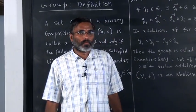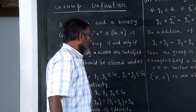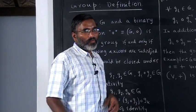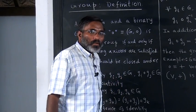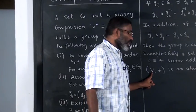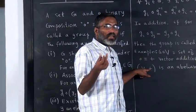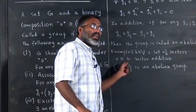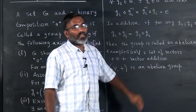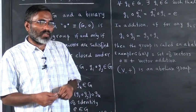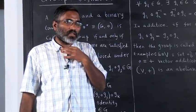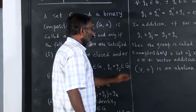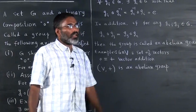(V, +) being an abelian group is necessary for V to be a vector space, but it is not sufficient. In a vector space, in addition to the set of vectors, you also need a set of scalars and another operation called scalar multiplication. The vector space together with vector addition, a field of scalars, and scalar multiplication must satisfy further axioms such as closure under scalar multiplication and a distributive property. For a set of vectors to form a vector space, it must first be an abelian group under vector addition.